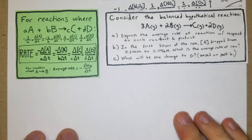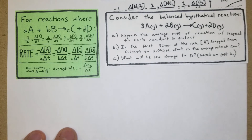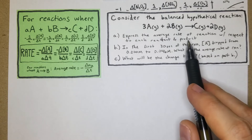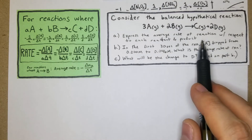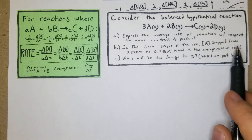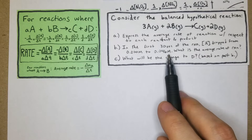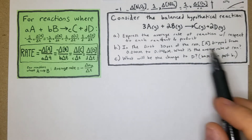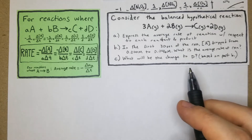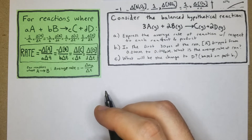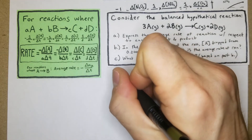Consider the balanced hypothetical reaction 3A + 2B → C + 2D. There are multiple parts: first, express the average rate of the reaction with respect to each reactant and product. In the first 30 seconds the concentration of A dropped from 0.200 M to 0.046 M. We need the average rate and the change in D.